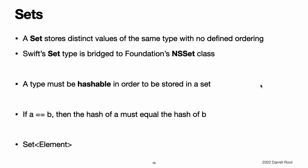Hash Values for Set Types. A type must be hashable in order to be stored in a set — the type must provide a way to compute a hash value for itself. A hash value is an integer value that is the same for all objects that compare equally, such that if A == B, the hash value of A equals the hash value of B. All of Swift's basic types, such as String, Int, Double, and Bool, are hashable by default and can be used as set value types or dictionary key types. Enumeration case values without associated values are also hashable by default. Note: you can use your own custom types as set value types or dictionary key types by making them conform to the Hashable protocol from the Swift Standard Library. For more information, see Hashable and Protocols.